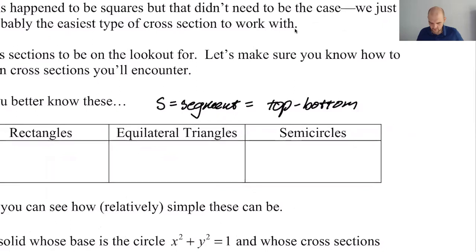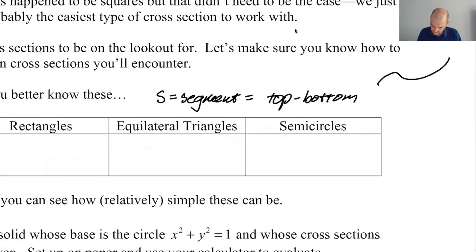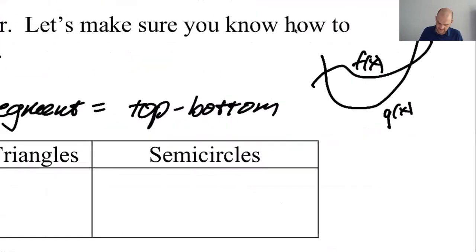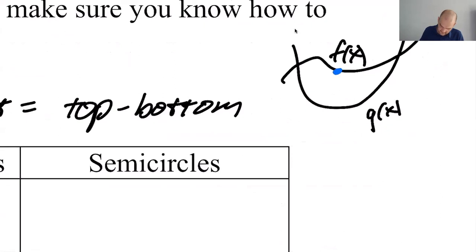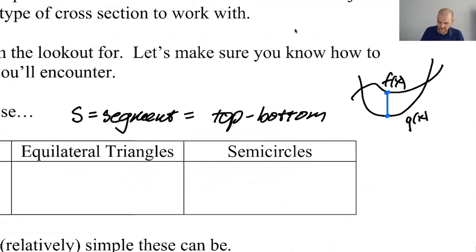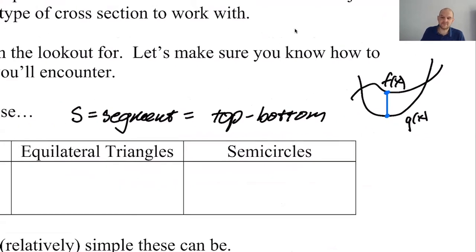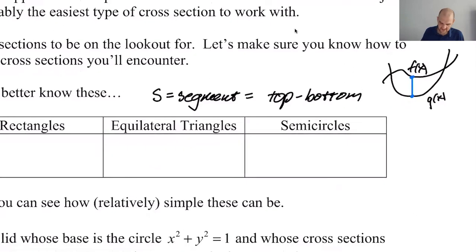So if you have a region, you know, where this is like g of x and f of x, then what I mean by S is you make a little segment perpendicular to whichever axis you're supposed to be using. And so if it's perpendicular to the x-axis, it's going to be top takeaway bottom. If it's perpendicular to the y-axis, it's going to be right takeaway left. Same as when we were finding area stuff, right? You want to keep using the same idea. So S is for segment. So in this case, it would be f of x minus g of x.